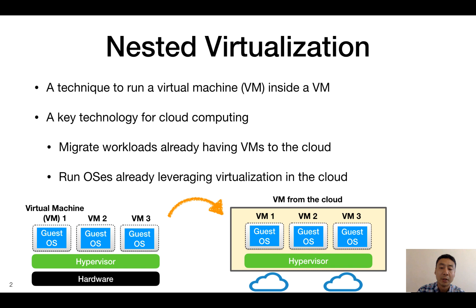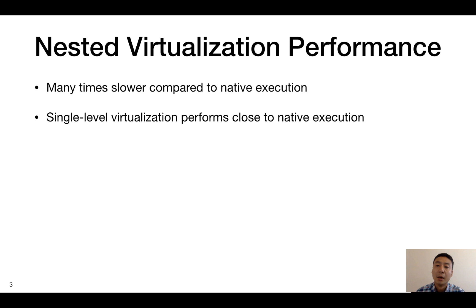This is why major cloud providers such as Microsoft Azure and Google Cloud support nested virtualization. While nested virtualization is very useful, one of the biggest drawbacks is its poor performance. Applications in a nested VM run many times slower compared to native execution. This is not the case for single-level virtualization, which performs close to native execution.